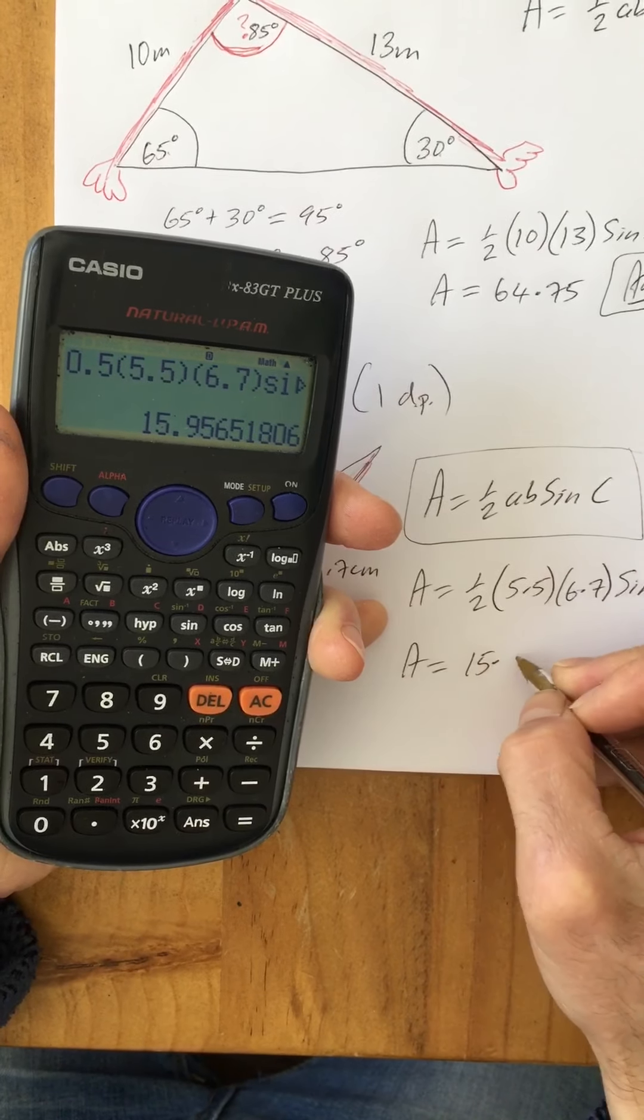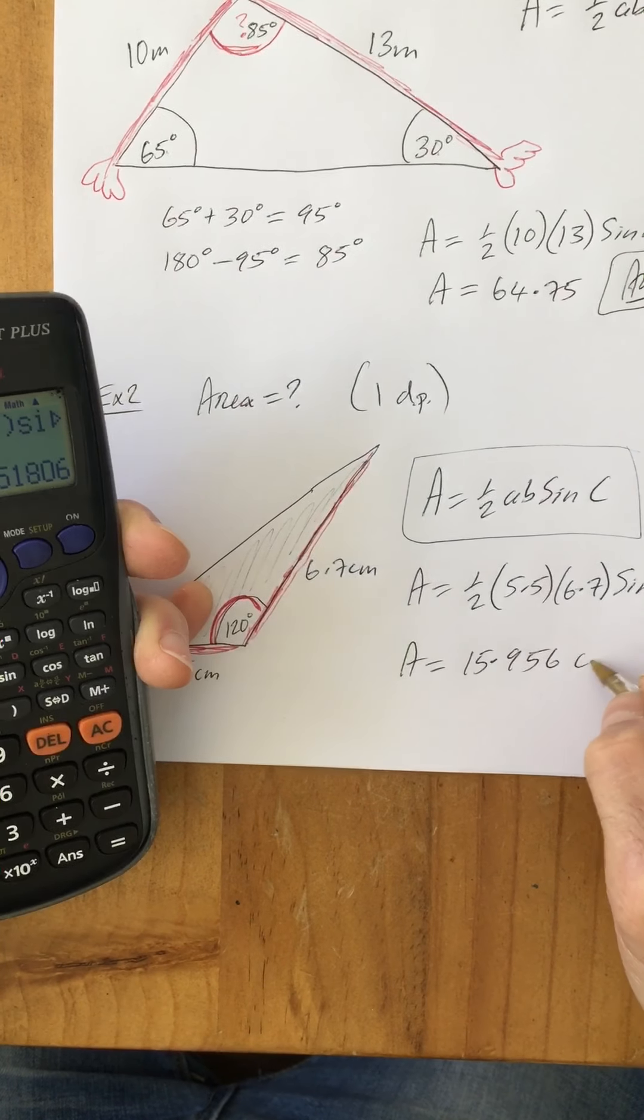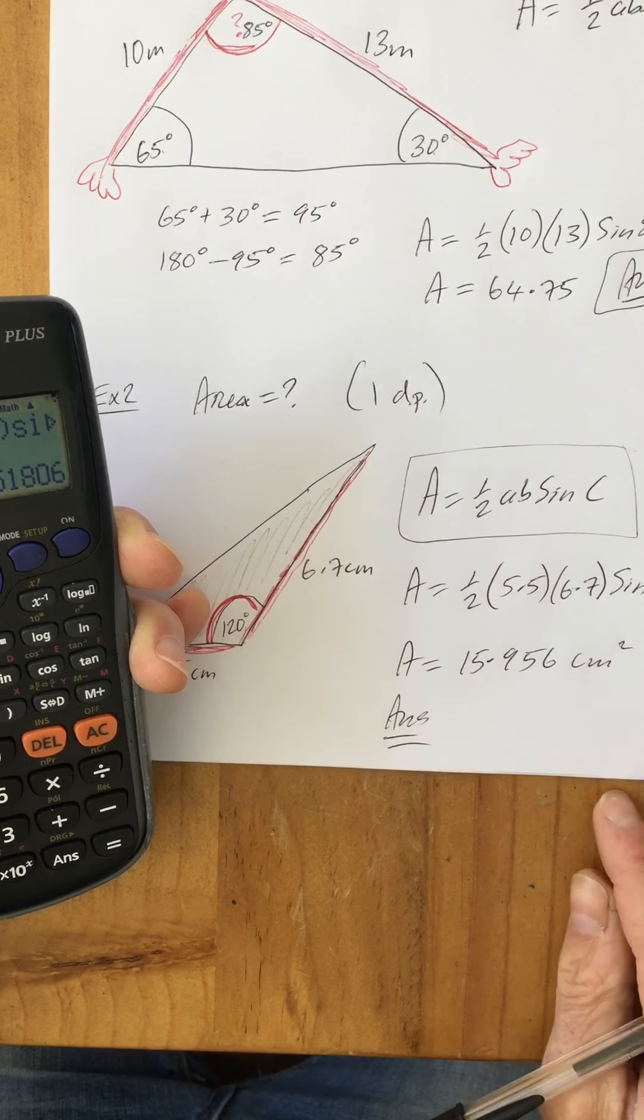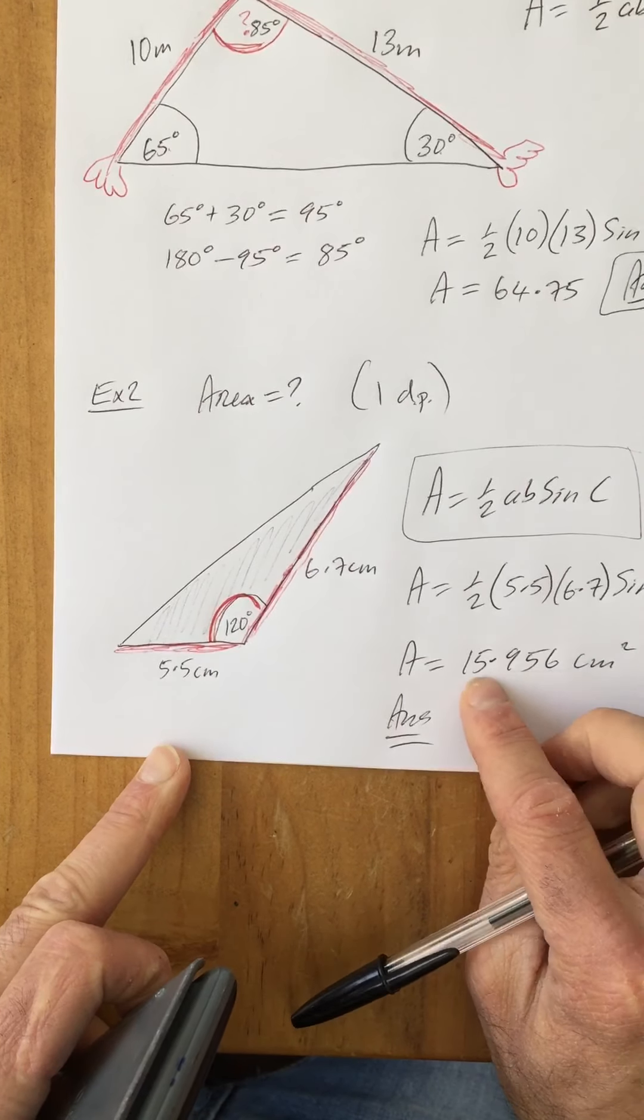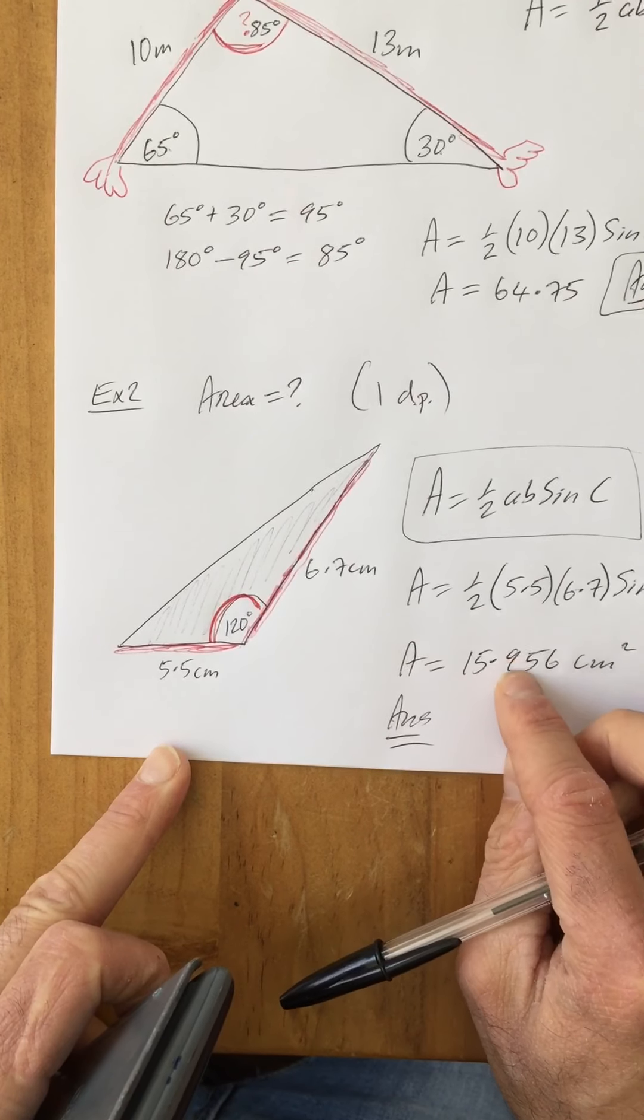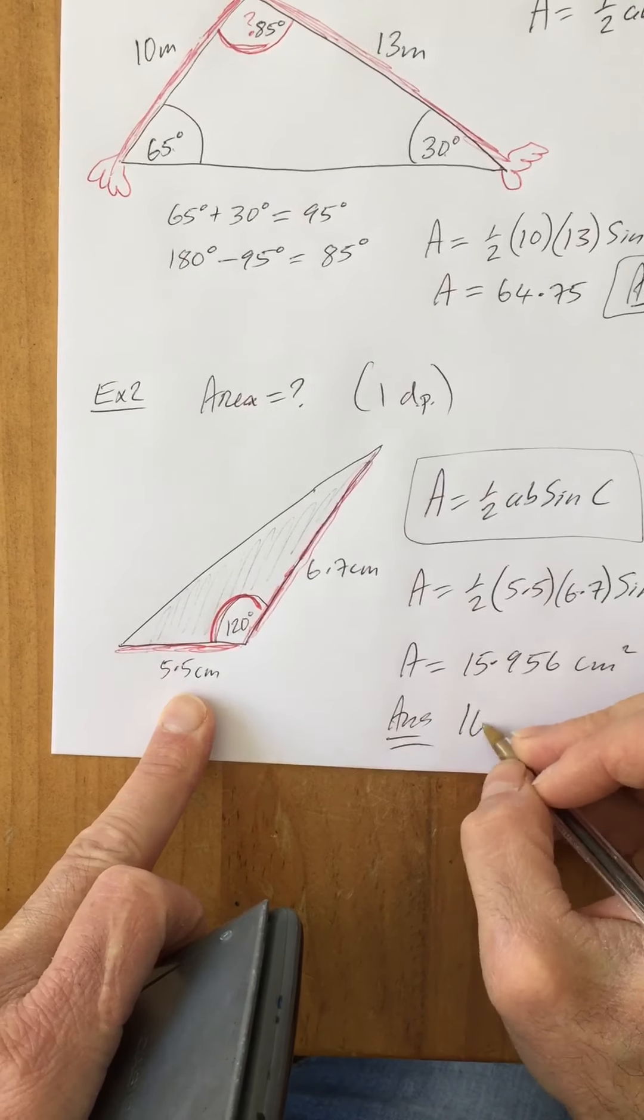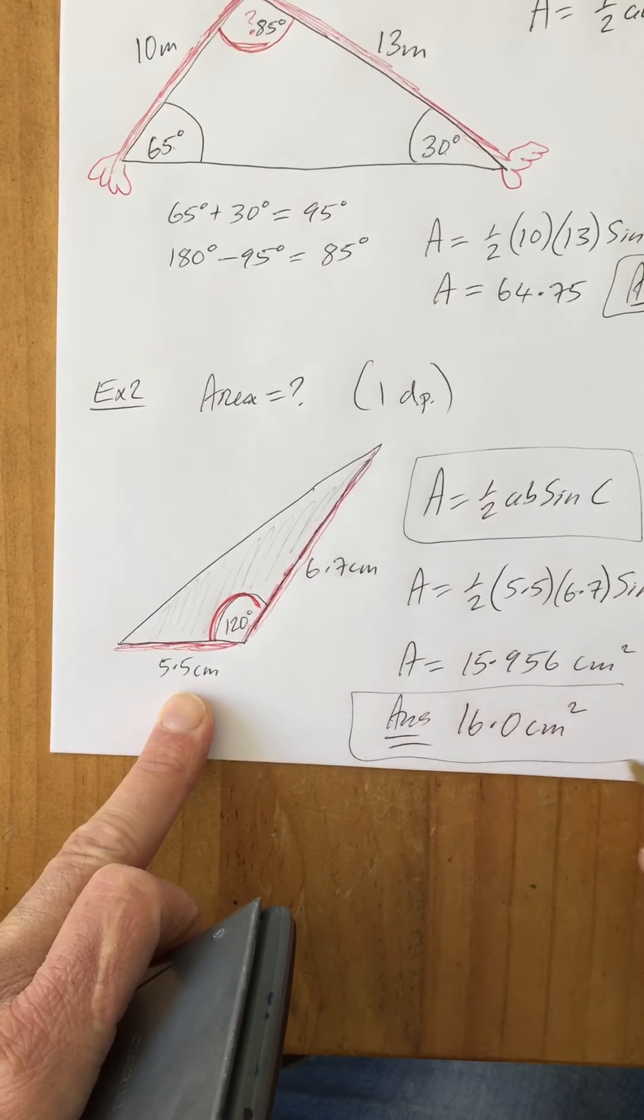So 15.956, and that's going to be centimeter squared. But they want the answer correct to one decimal place. So in this case, 15.9 will round up to—well, 9 can't go up any higher, so it becomes a 0 and this becomes 16. So the answer is 16.0 centimeter squared.